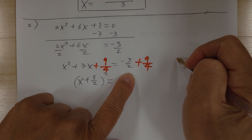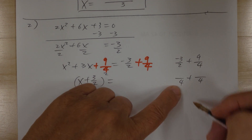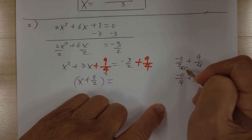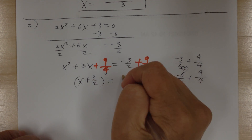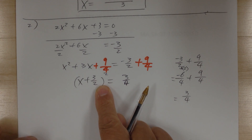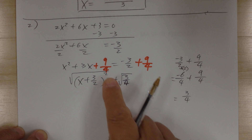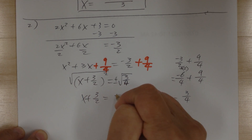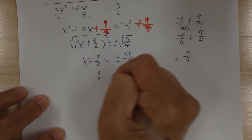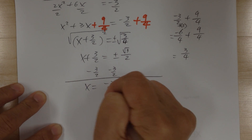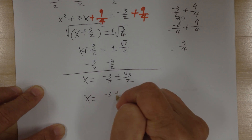Now you're ready to solve. Take the square root on both sides — remember plus or minus. Square root and square cancel. The square root of 3 remains √3; the square root of 4 gives 2. Then minus 3/2 on each side, so x = −3/2 ± √3/2. Since they share a common denominator, combine: x = (−3 ± √3) / 2.